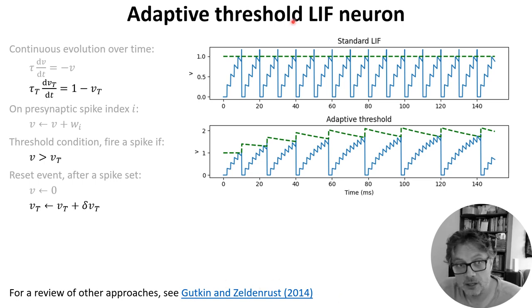In the simple model here, we just introduce a variable threshold represented by the variable VT. Each time, that's the green line here, each time the neuron spikes, the threshold increases, making it more difficult to fire the next spike. And then slowly, but then the threshold slowly decays back to its starting value.